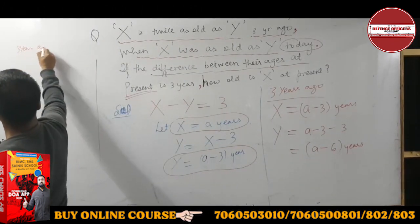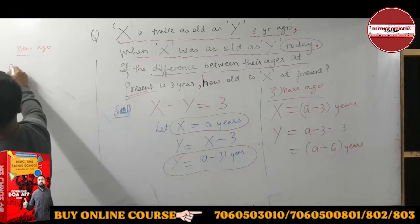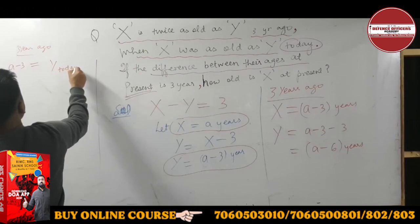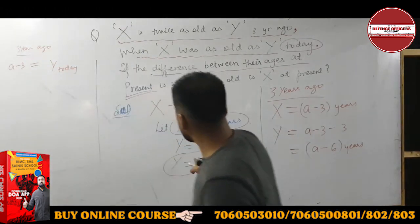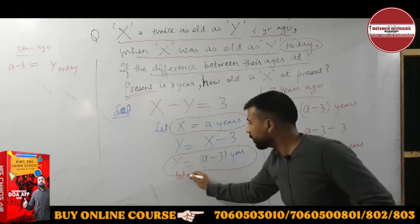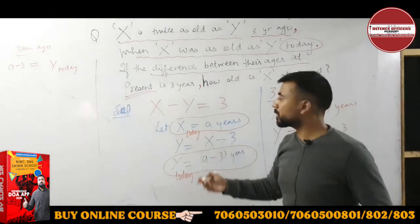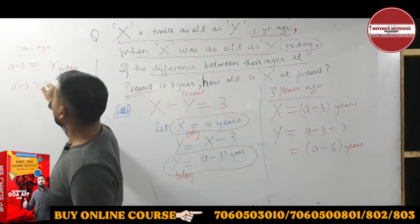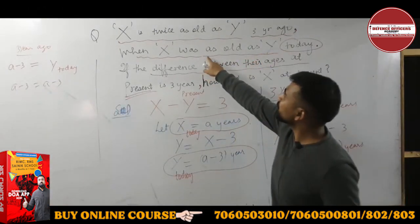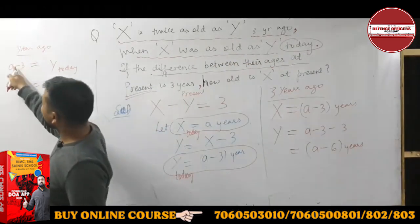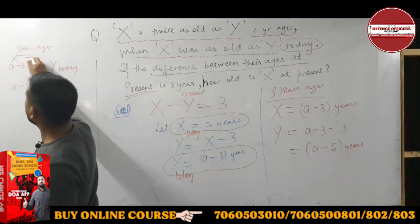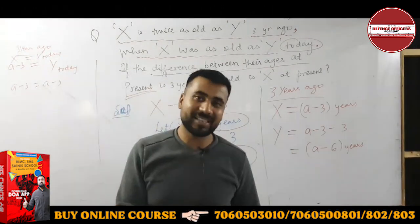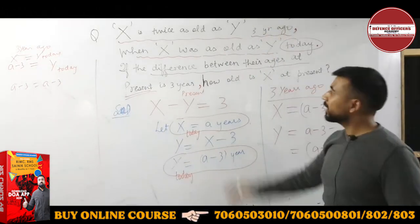When X was as old as Y today: X's age 3 years ago equals Y's age today. X today is 'a', so X 3 years ago is a minus 3. Y today is a minus 3. So a minus 3 equals a minus 3 — this satisfies the condition that 3 years ago X was as old as Y is today.